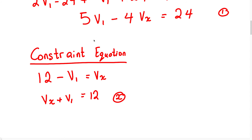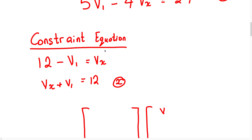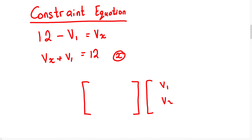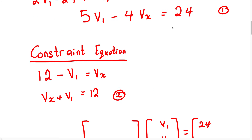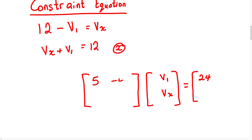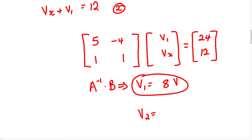Now because we have two equations and two unknowns, we can use the matrix method to solve for the unknowns. We set up a 2×2 matrix with unknowns V1 and Vx. For equation 1, the coefficients are positive 5 and negative 4, equal to 24. For equation 2, the coefficients are positive 1 and positive 1, equal to 12. Using a calculator to take the inverse of A multiplied by B, we get V1 equals 8 volts and Vx equals 4 volts.